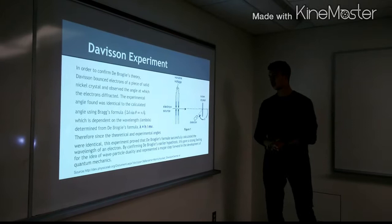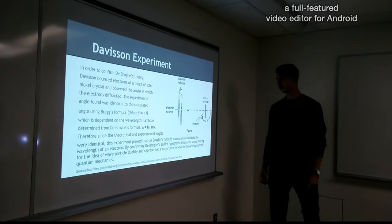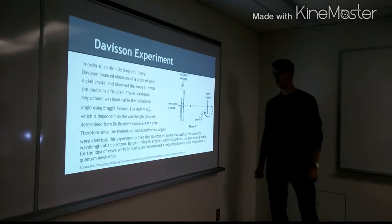This experiment proved that De Broglie's formula successfully calculated the wavelength of an electron by confirming De Broglie's earlier propellences. This gave a strong footing for the idea of wave particle duality and represented a major step forward in the development of quantum mechanics.